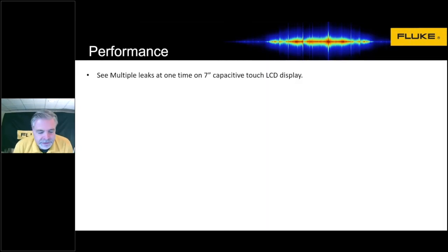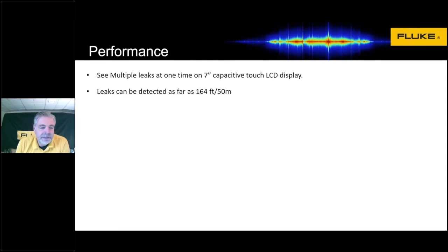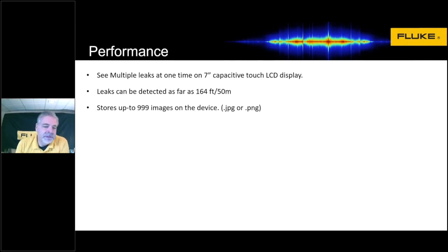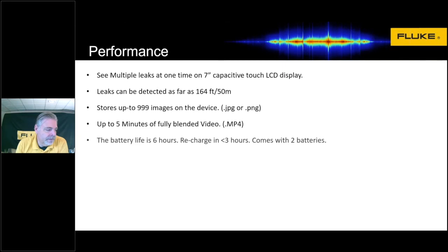From a performance point of view, the II900 has a seven-inch capacitive touch LCD display. It can see leaks — more than one — up to as far away as 164 feet, or about 50 meters, half a football field. We can store up to about 1,000 images on the device as JPEG or PNG files. We also have the ability to store up to five minutes of fully blended video as an MP4 file. The unit comes with two batteries, and each battery lasts about six hours and recharges in about three hours. If you're rotating the batteries as they wear out, you'll never be out of power. Beyond compressed air, we have the ability to see vacuum, steam, or other gases.